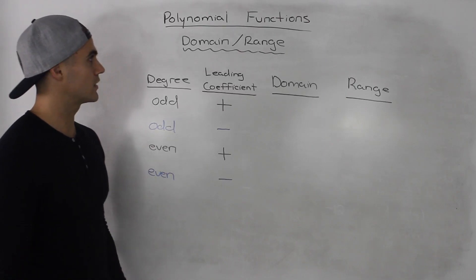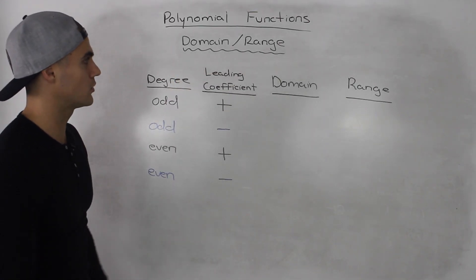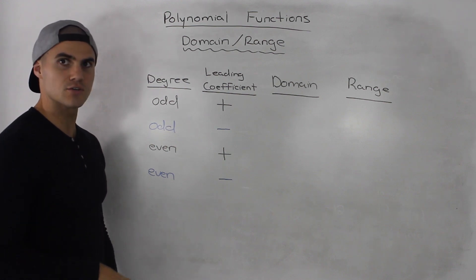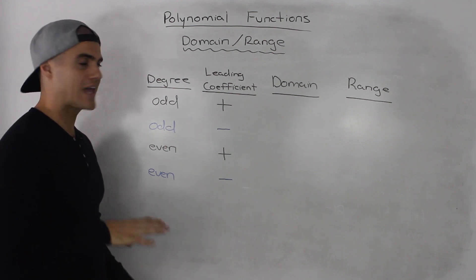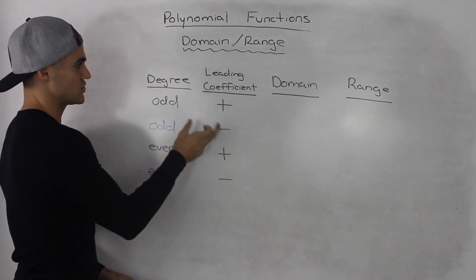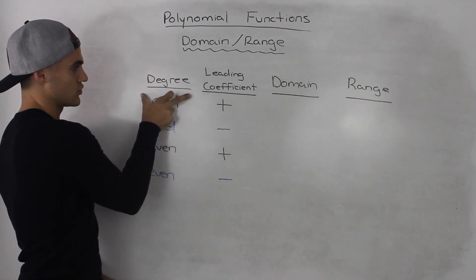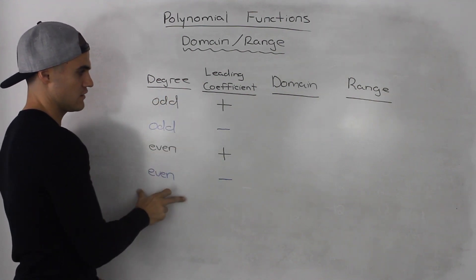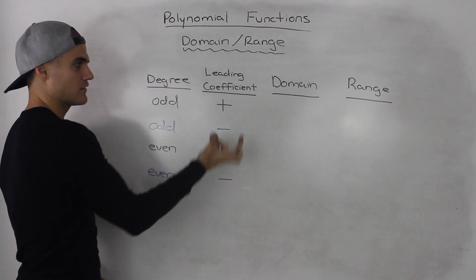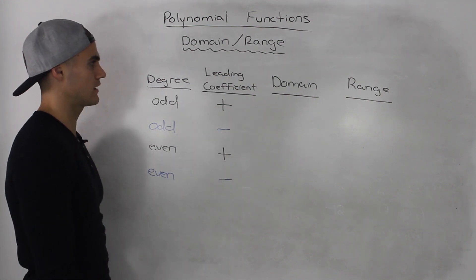In this video we're going to talk about the domain and range of polynomial functions. Similarly to when we discuss end behaviors of polynomial functions, the domain and range is going to depend on the degree — whether it's odd or even — and the sign of the leading coefficient, whether it's positive or negative.